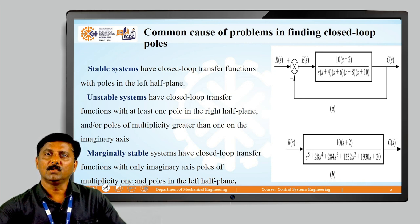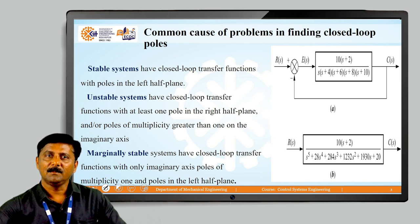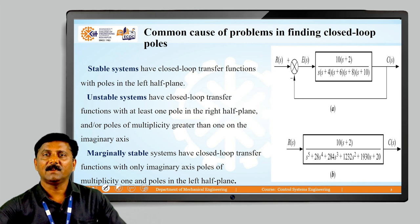We can also define stability in terms of poles and zeros. The general system representation has a forward gain block G of S with H of S equal to 1, and the overall closed loop transfer function is defined as C of S by R of S. A stable system will have its closed loop transfer function poles in the left half of the S plane — a plane made up of a real axis and imaginary axis.